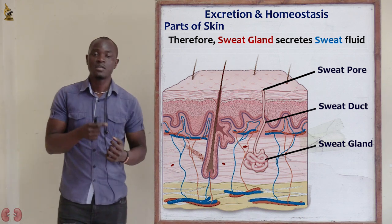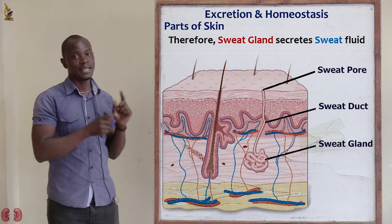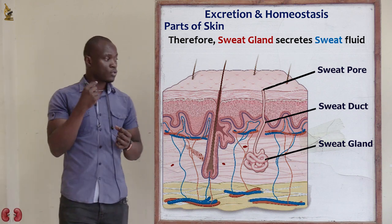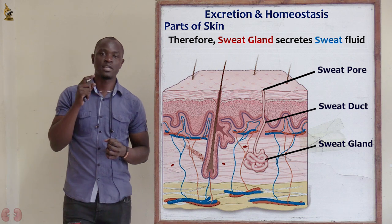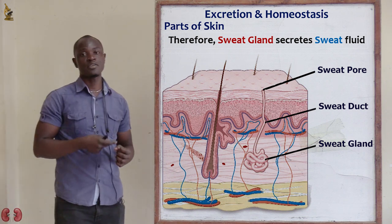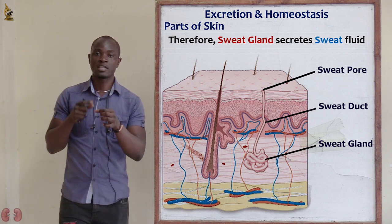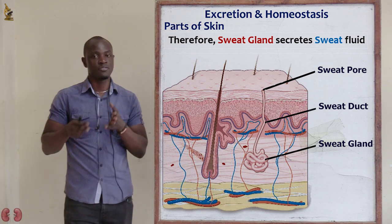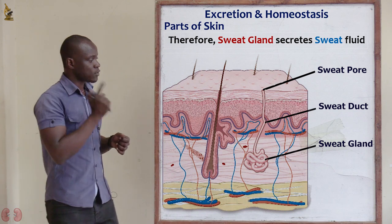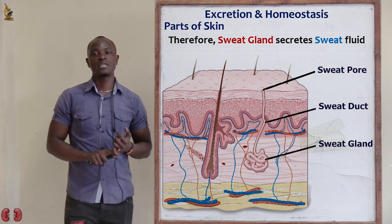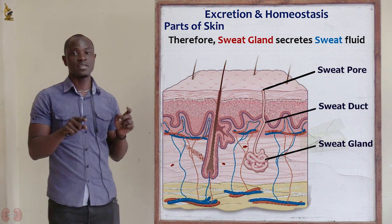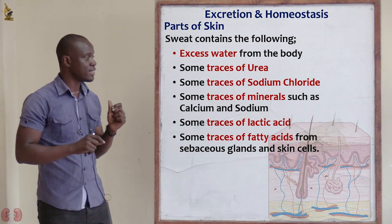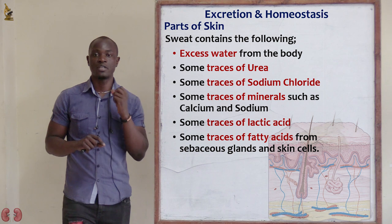After the sweat gland has secreted sweat, the sweat travels through the sweat duct. A duct in biology means anything that a fluid can pass through. The sweat moves through the sweat duct and onto the surface of the skin, where it exits through the sweat pore — the pore being the opening of the duct.